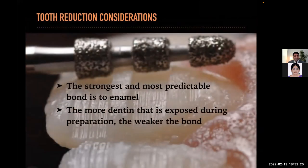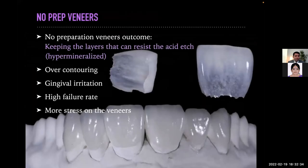Always remember: the strongest and most predictable bond is to enamel. The more dentine exposed during preparation, the weaker the bond. For no-prep veneers, keeping the layers that can resist acid etching — which are hypermineralized — is important; otherwise you risk over-contouring, gingival irritation, high failure rate, or more stress on the veneers.